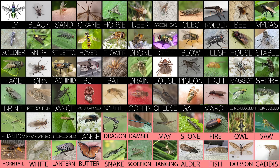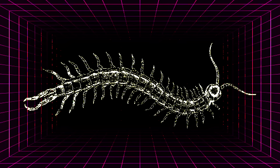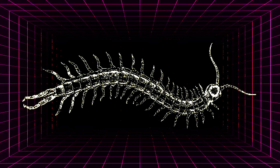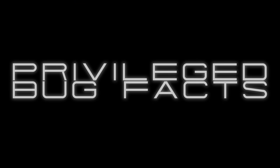Now that we've completed this list, understand that this only scratched the surface — these were just the very broad names. There are so many flies specialized to a specific plant or host, and very specific common names can appear that are sometimes used for just one species. For this video I tried to be as broad as possible, but feel free in the comments to let me know any flies I missed, especially if the fly is not a true fly from the order Diptera. Thanks for watching this episode of Privileged Bug Facts — stay tuned for more bug content just like this.